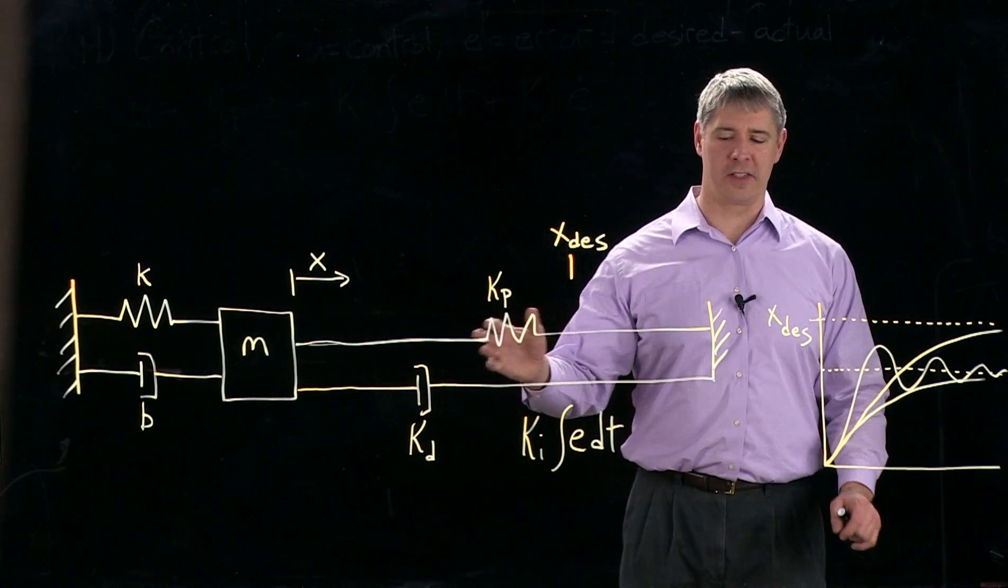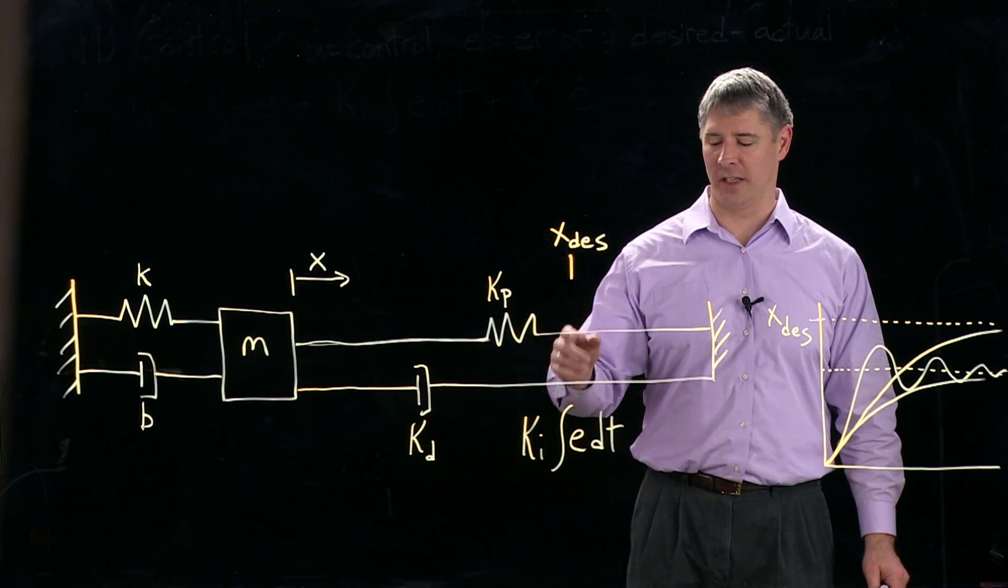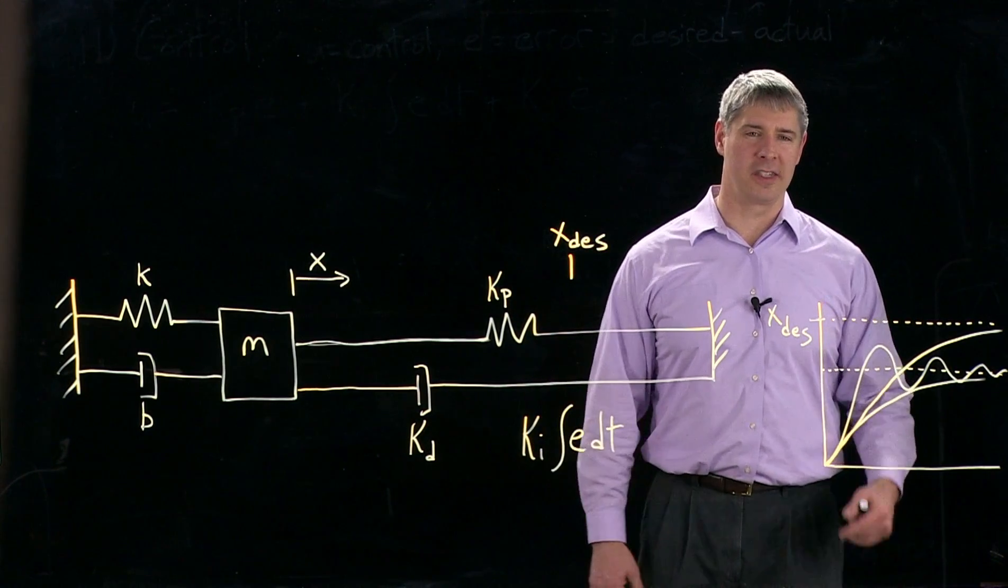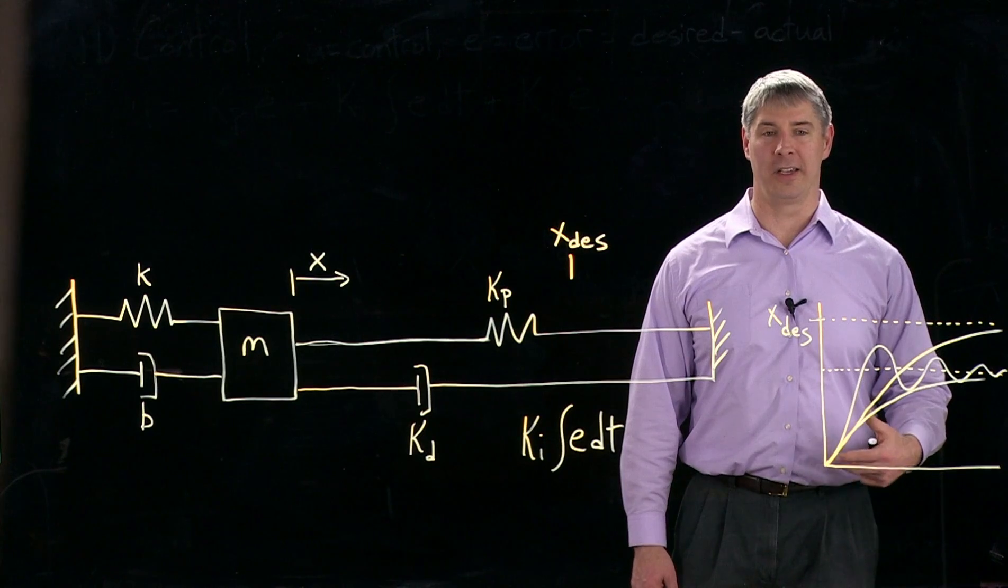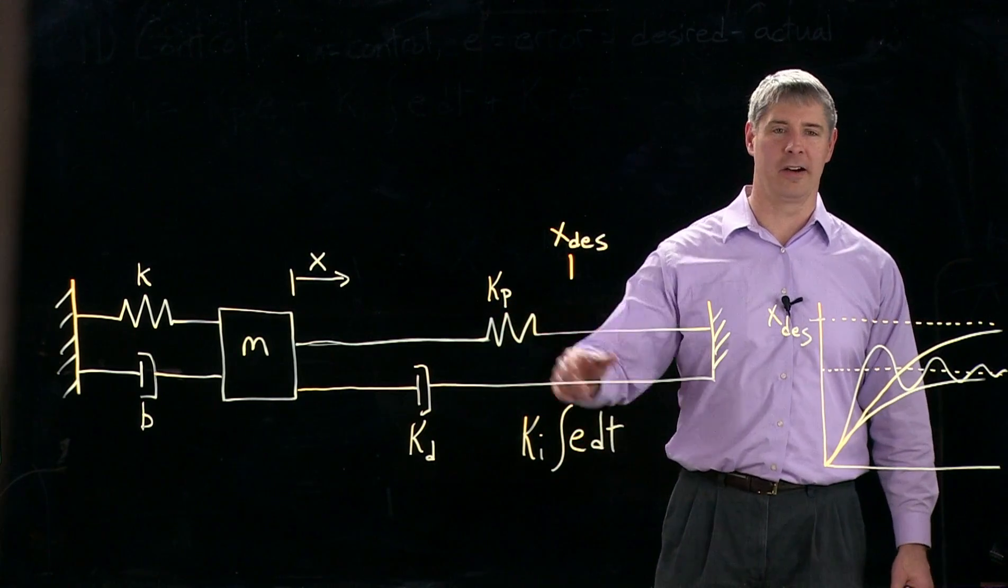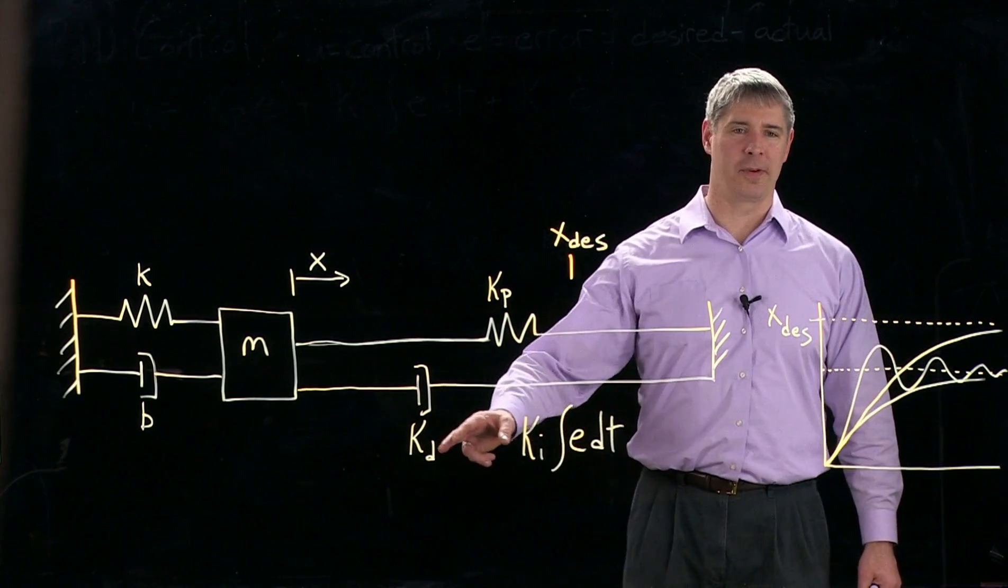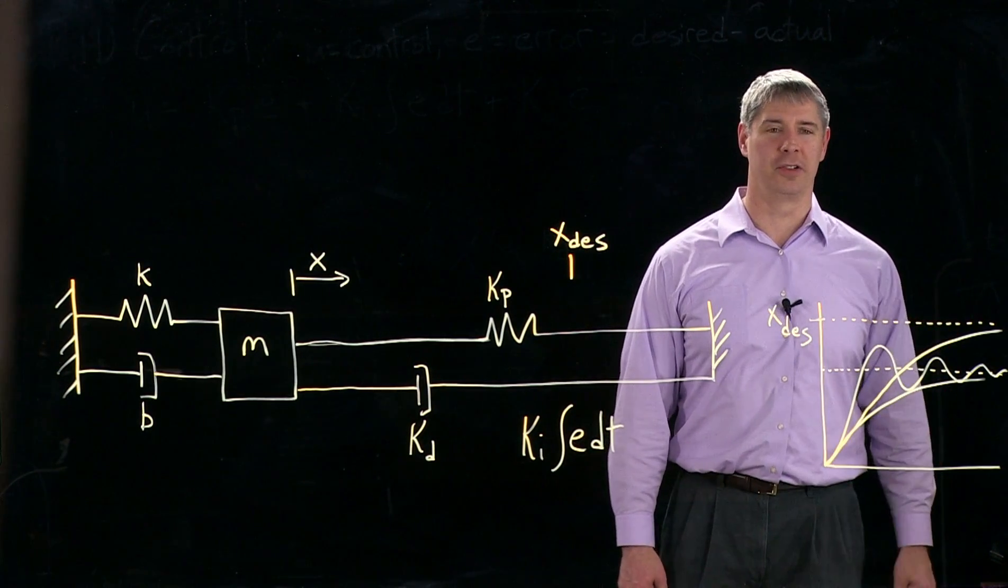So again, this K sub P provides the spring to get it to the right position. K sub I provides another kind of spring but acting on the integral of the error instead of the error itself. And K sub D provides the damping to prevent it from oscillating and overshooting.